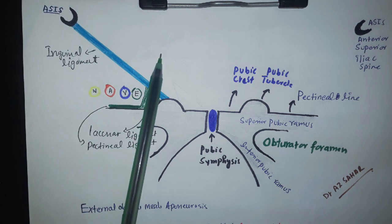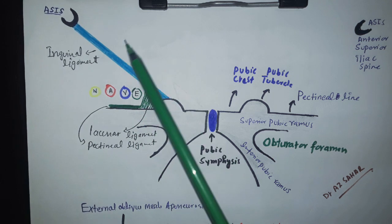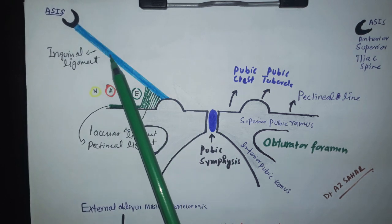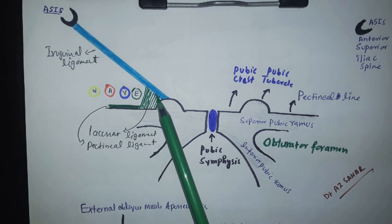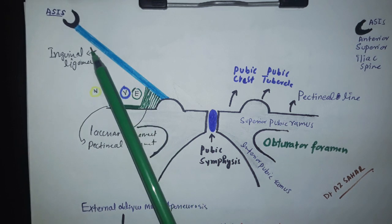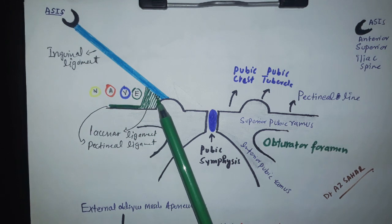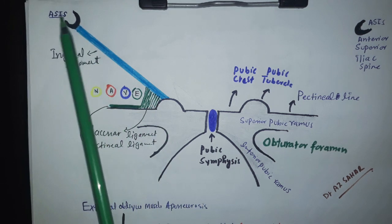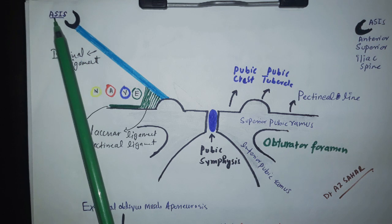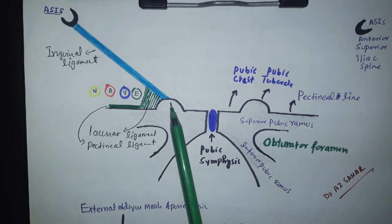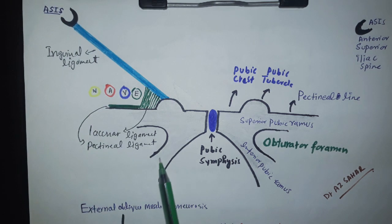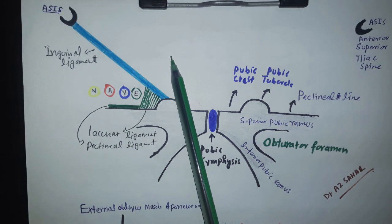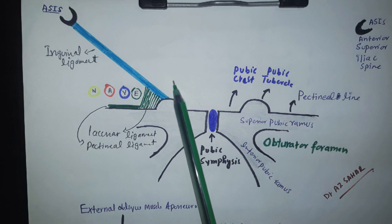Now, the external oblique muscle aponeurosis. Here we will be having the external oblique muscle aponeurosis. The lower border of the external oblique muscle aponeurosis folded on itself and is going to form a ligament which is called the inguinal ligament. This inguinal ligament extends from the anterior superior iliac spine up to the pubic tubercle. So the inguinal ligament is actually made from the aponeurosis of the external oblique muscle.